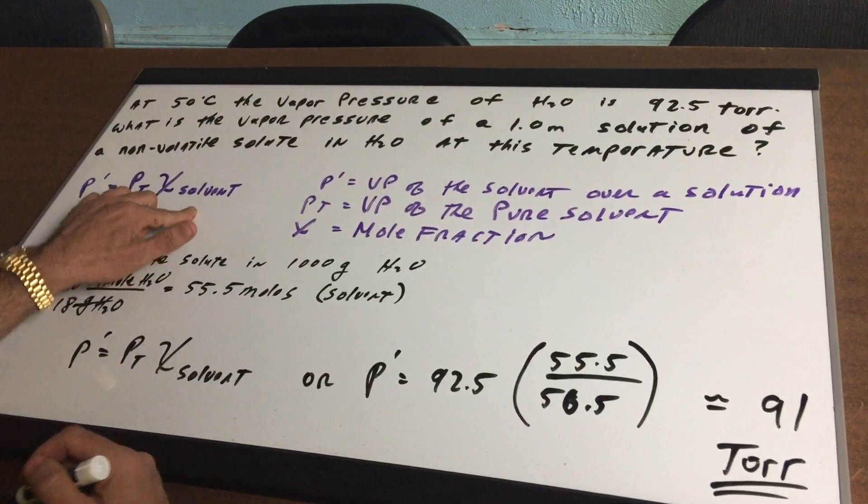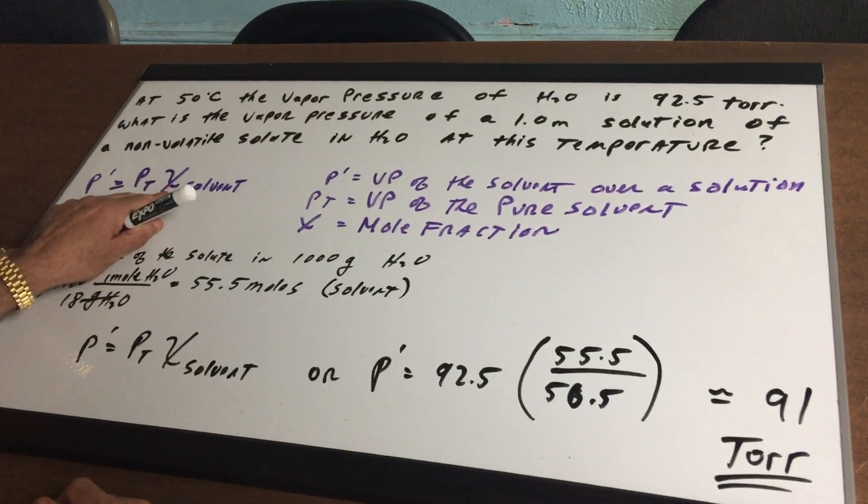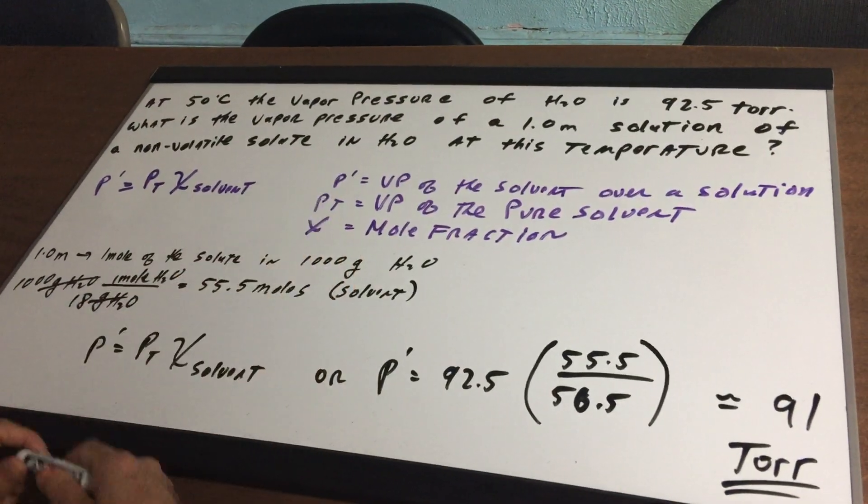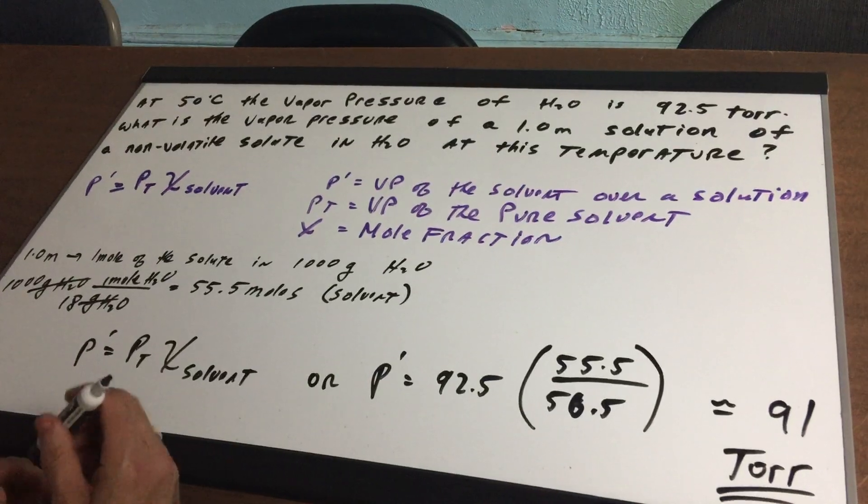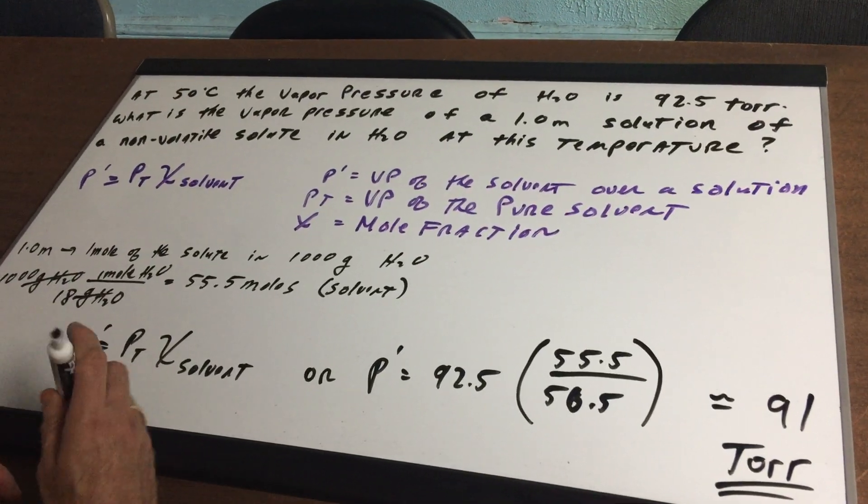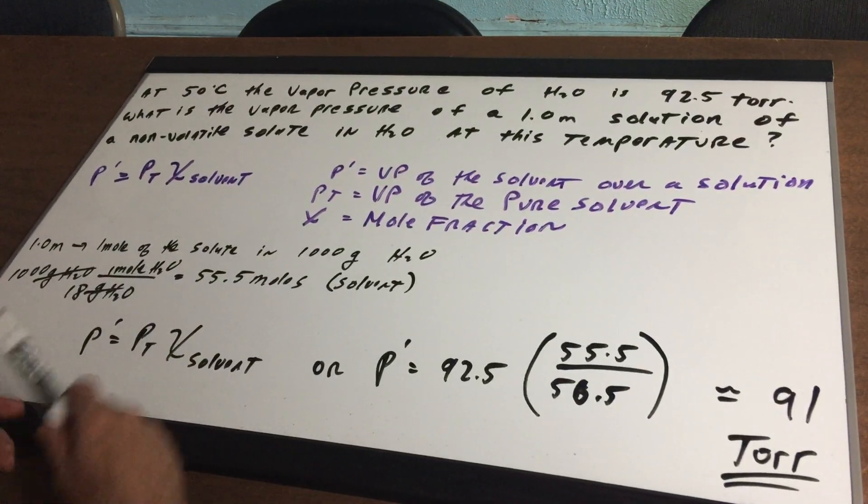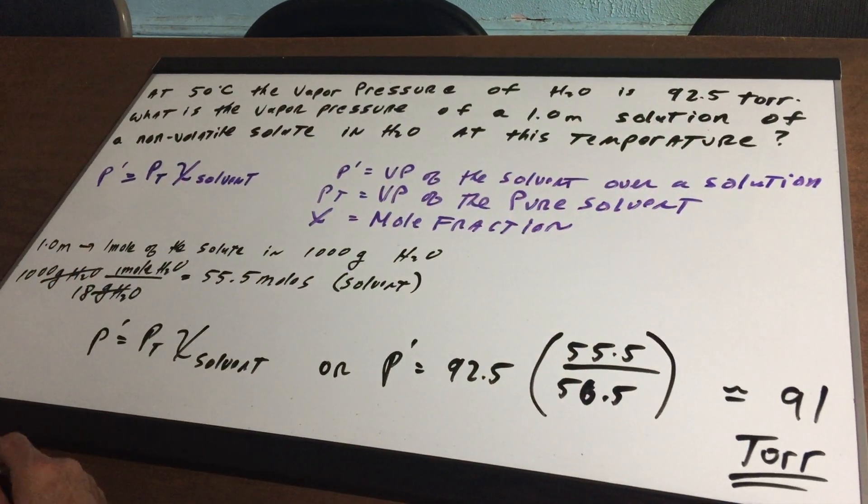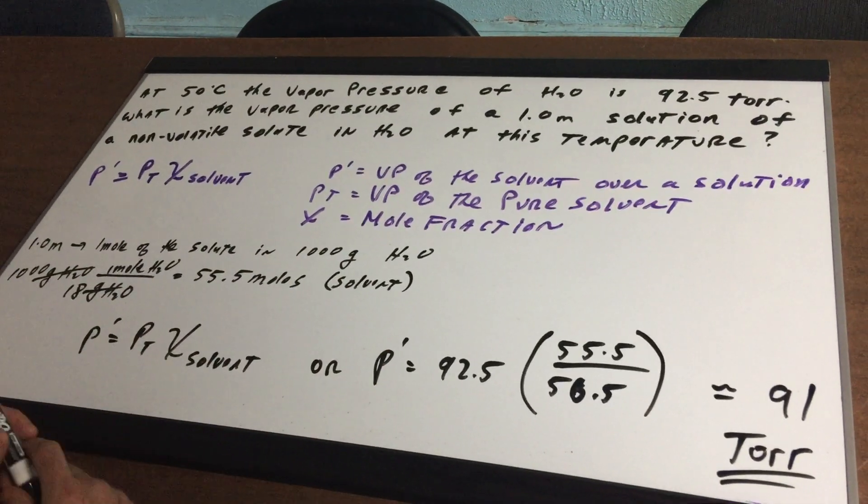Alright, so what you're going to do is you're going to write Raoult's law, which says p prime equals pt times x of solvent. p prime is going to be the vapor pressure of the solvent over a solution. pt is the vapor pressure of the pure solvent. So you can see the vapor pressure of the pure water was 92.5, so that's going to be my pt, and x stands for mole fraction.